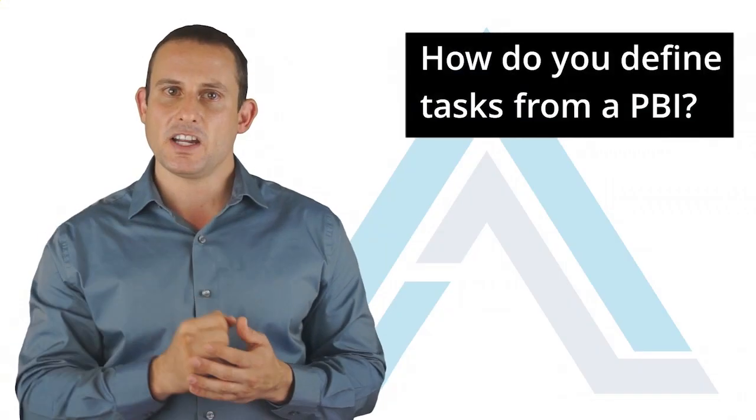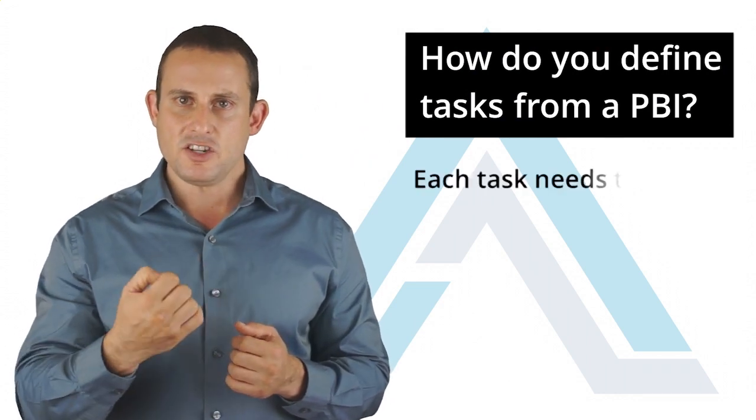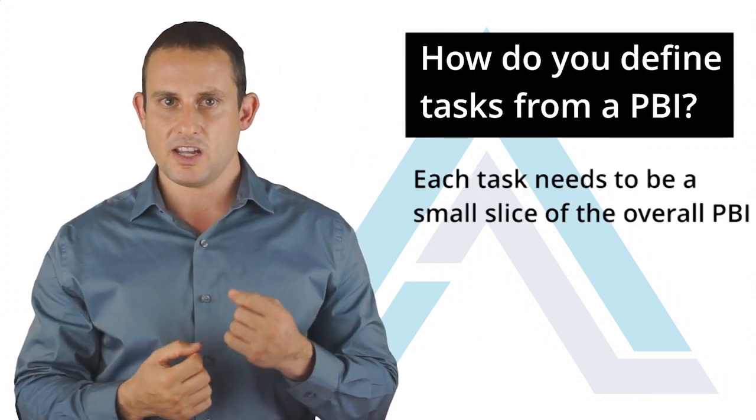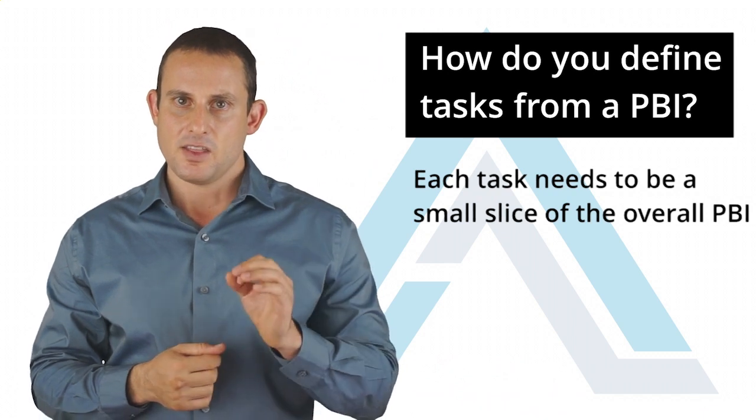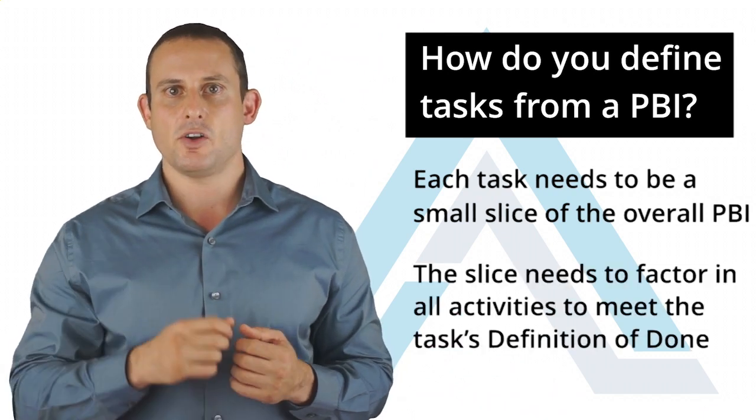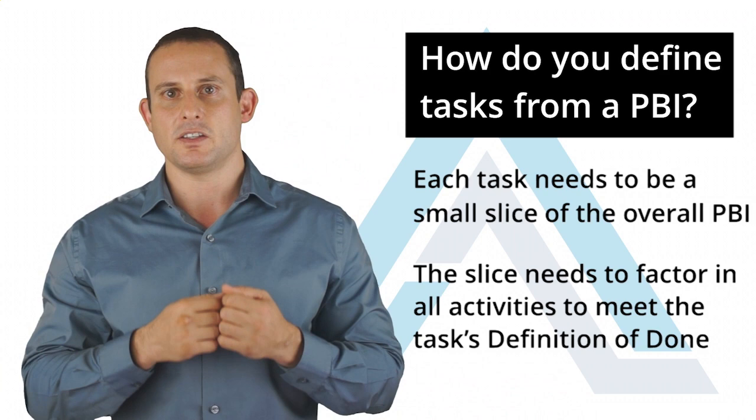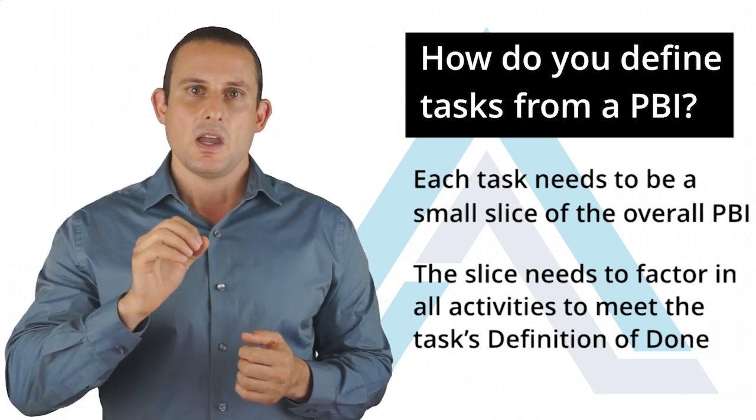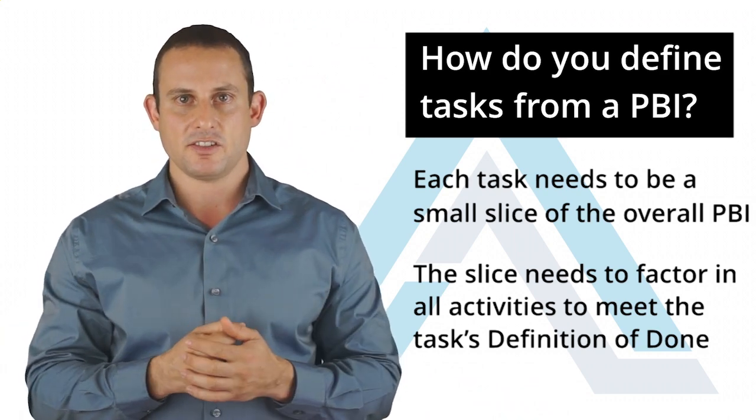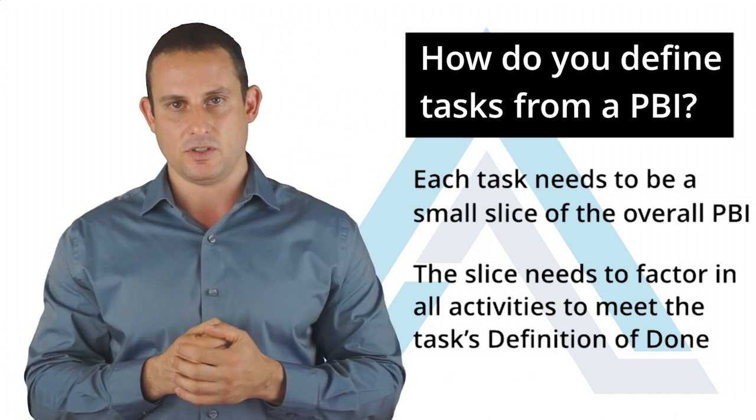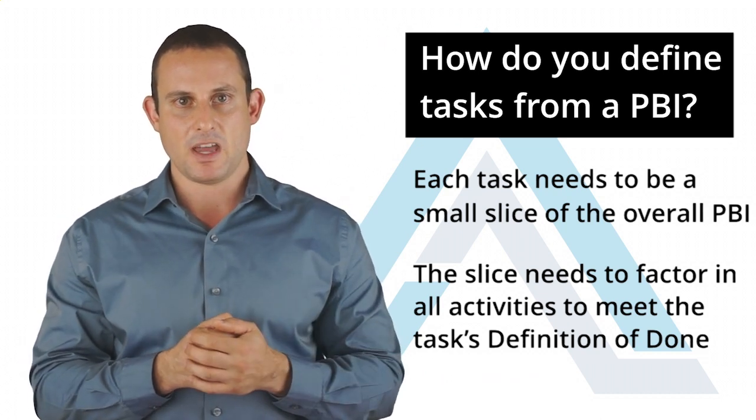So how do you define tasks from a PBI? Well, each task needs to be a small slice of the overall PBI. This slice needs to factor in all activities required to meet the task's definition of done. It is my preference that each task should take no longer than eight hours. But the less time, the better in my opinion.